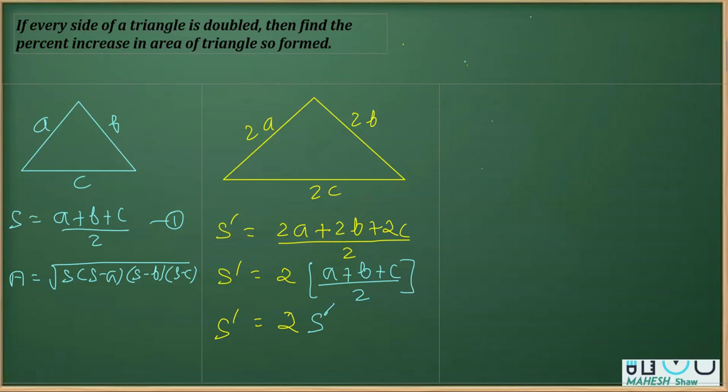Now, in the next part, I am going to find the area of this new triangle area, which is A. And this time I am taking A dash here. So it's going to be S dash, because here S is S dash. S dash minus side, which is 2A. This is S dash minus 2B. And likewise, it is S dash minus 2C.